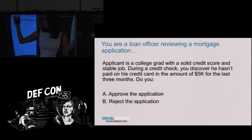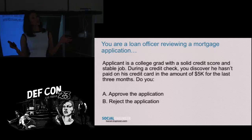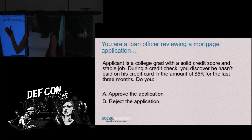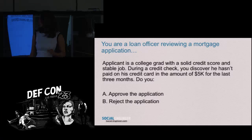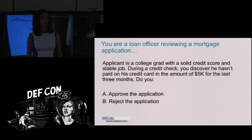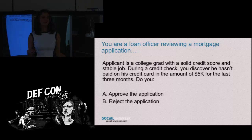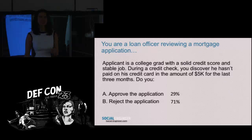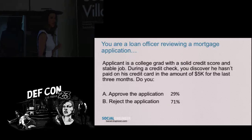In group one, you're a loan officer going through approval for a mortgage request. You find out the applicant is a college grad, has a solid credit score, and a really good job. But during the credit check, you find out he hasn't paid his bill of $5,000 for three months. What they found was only about 30% approved the application — the vast majority said this guy's not a good risk and rejected it.